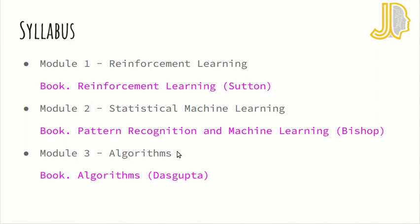Here the modules are illustrated at a high level. For the first module on reinforcement learning, we're going to cover a lot of things, including deep reinforcement learning and inverse reinforcement learning — quite a lot of material. In statistical machine learning, I already mentioned some of what we'll cover. For the algorithms part, we have books we're going to follow. It's up to you which module to follow, but I'd advise following all of them.